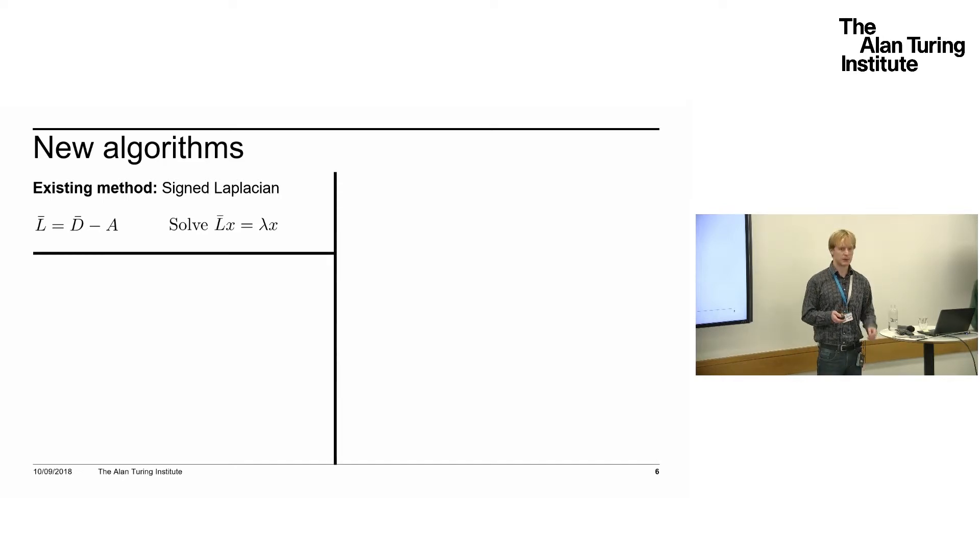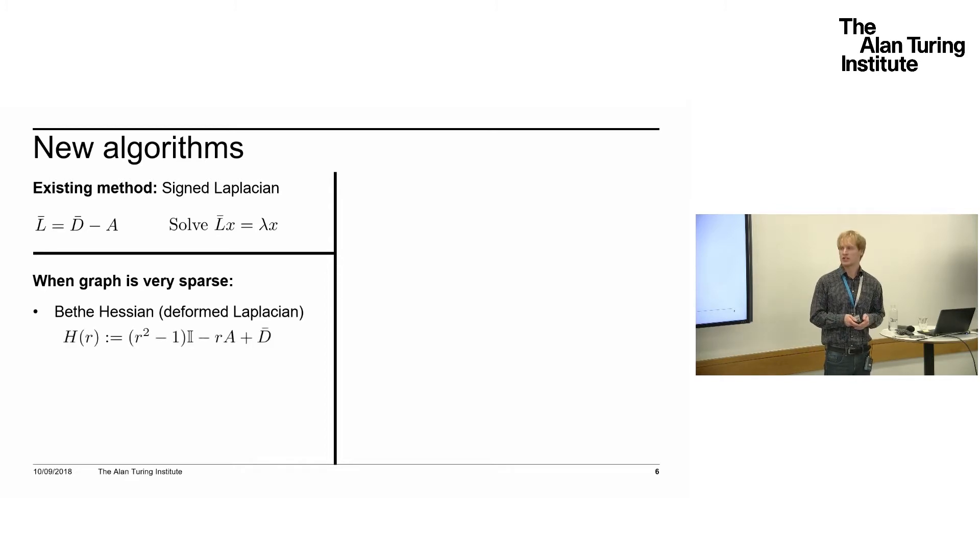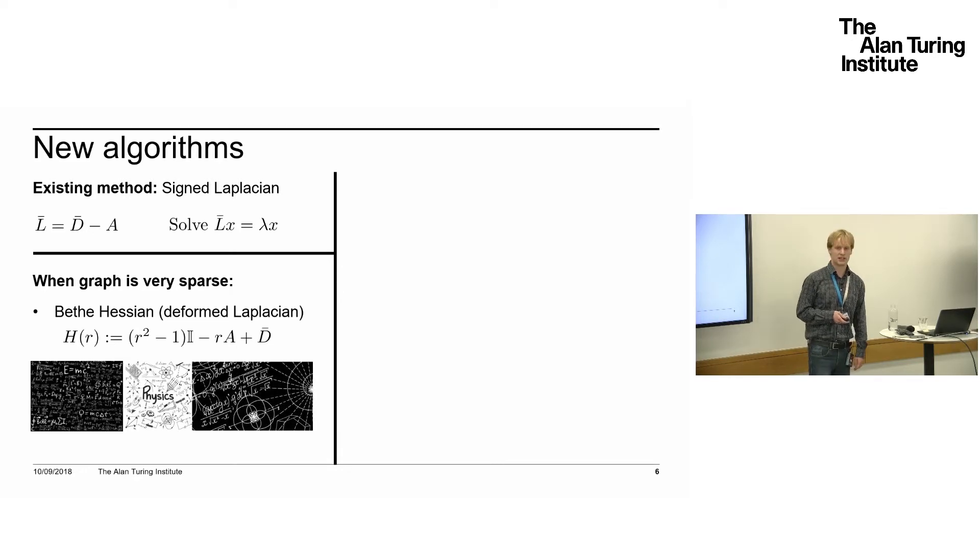When the graph is very sparse, the problem is it's very sensitive to outliers. In sparse graphs, you often get nodes with particularly high or low degree, and they throw everything off—often putting them in clusters on their own, which is not good. There's a slightly different matrix we can use, called the Bethe Hessian or deformed Laplacian, which takes some parameter r and mixes the ratio of those two matrices A and D-bar, and adds some multiple of the identity along the diagonal to regularize the matrix, making it less sensitive to noise. There is justification for this from statistical physics, so it's basically magic. That works quite well when graphs are very sparse.